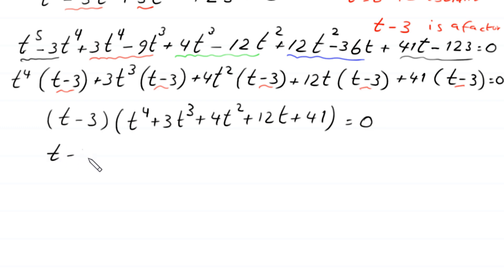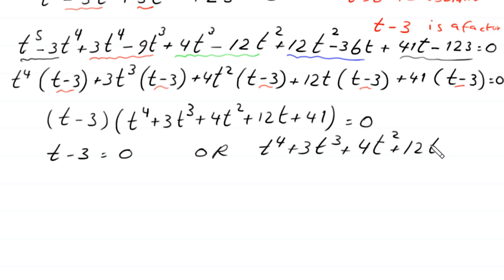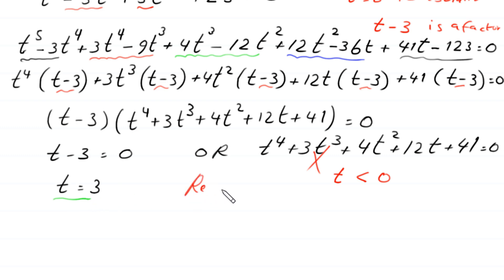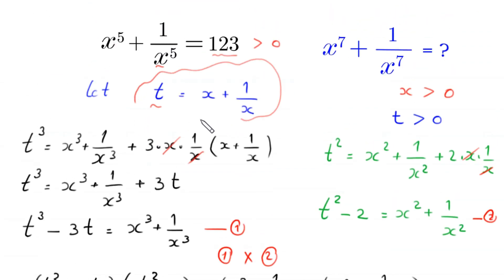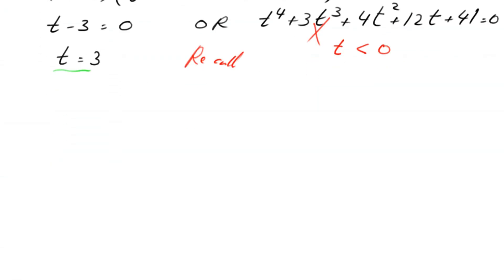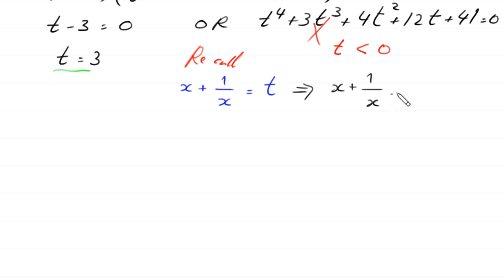From t minus 3 equals 0 we get t equals 3. For the quartic factor, since t must be greater than 0 and the quartic has no positive real roots, we reject that solution and accept only t equals 3. Recalling that t equals x plus 1 over x, we have x plus 1 over x equals 3.